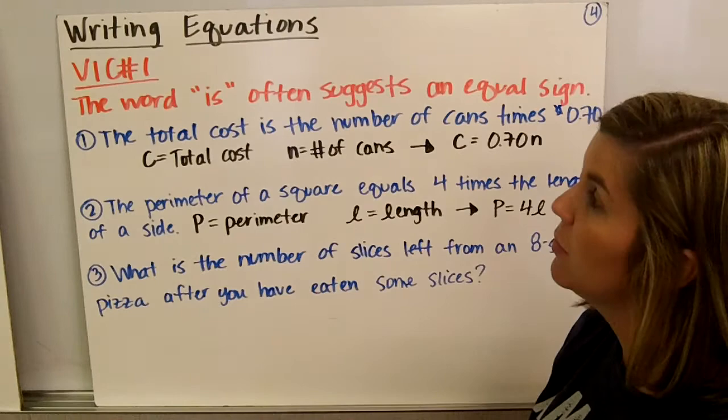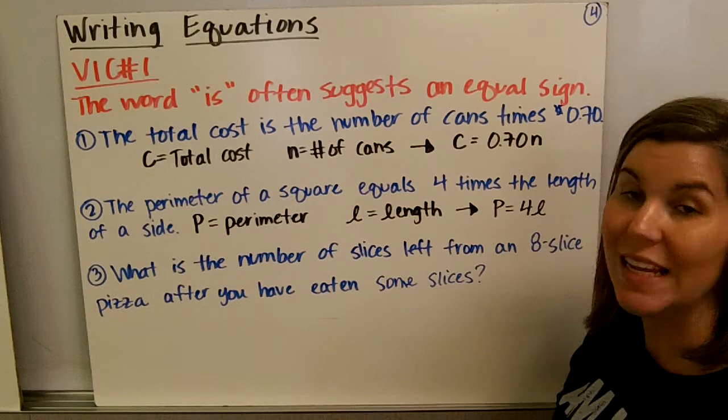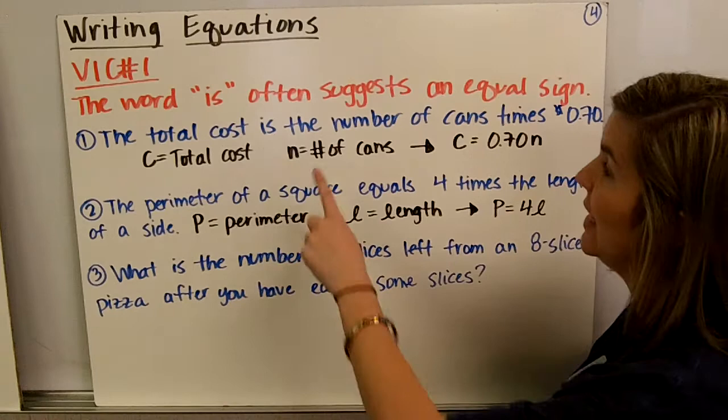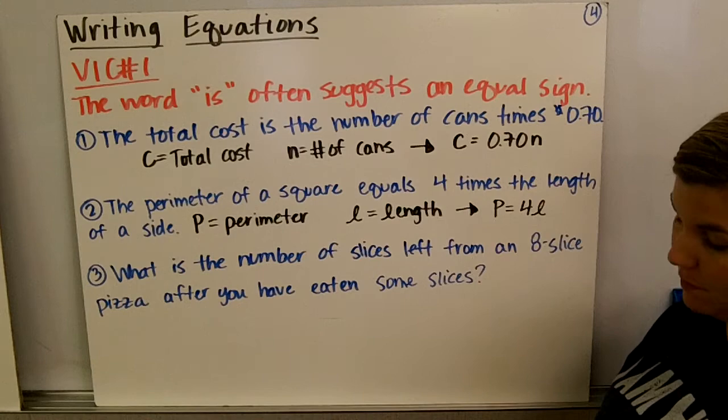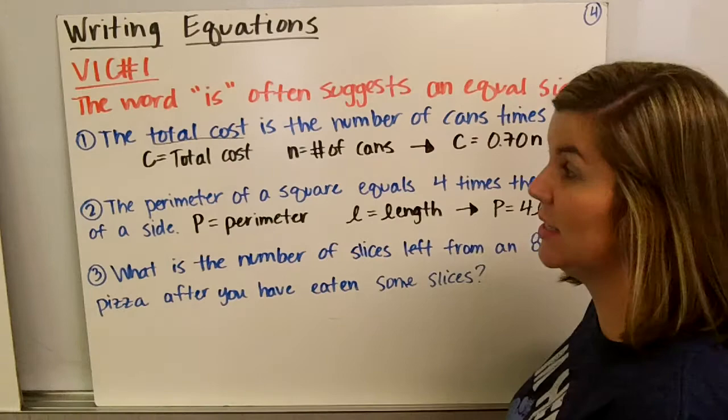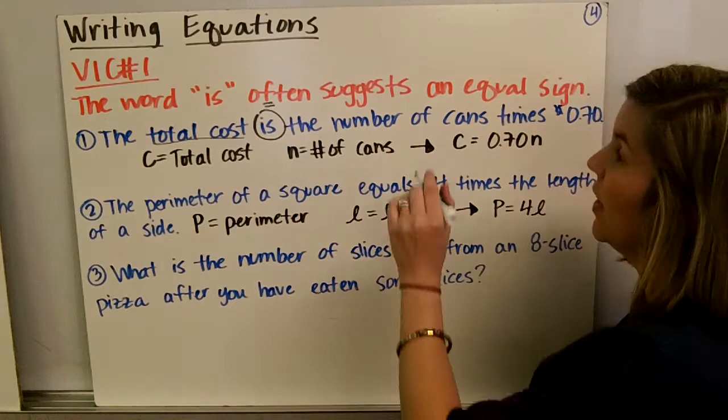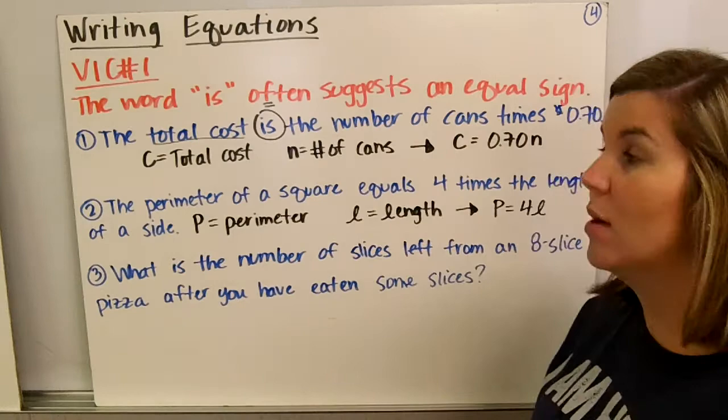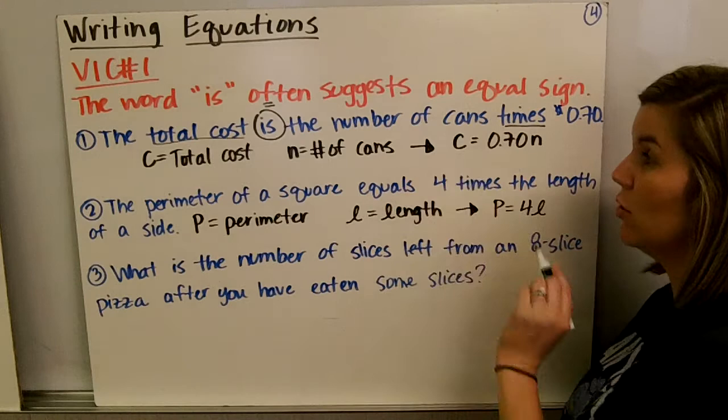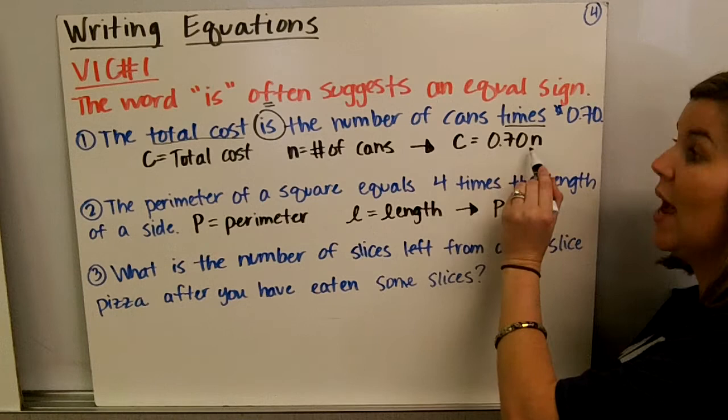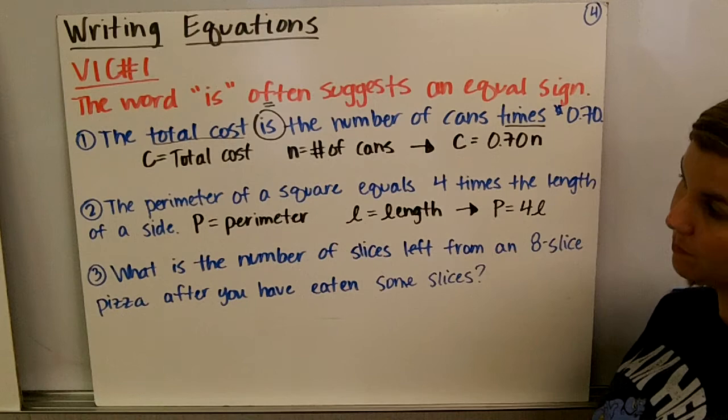Writing equations. Remember, the word 'is' often suggests an equal sign. So when you see the word 'is' in a word problem, think equal. The total cost is the number of cans times 70 cents. Let's define the variable: C equals the total cost. The number of cans is n. So we have the total cost is—that's our equal symbol—70 cents times n, or 0.70n.